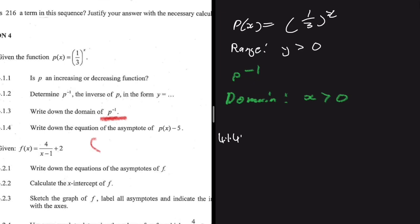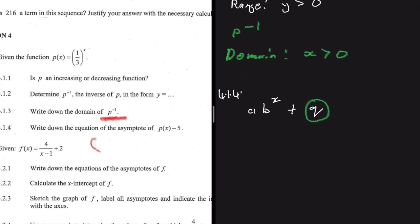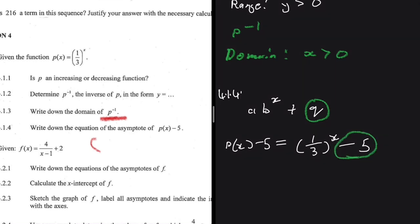For question 4.1.4, write down the equation of the asymptote of p(x) - 5. For any exponential function in the form a·b^x + q, the value q is always the asymptote. For p(x) - 5, this equals (1/3)^x - 5. Here q is -5, so the asymptote is y = -5.